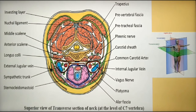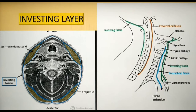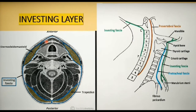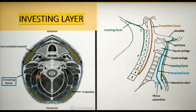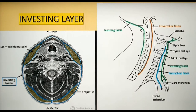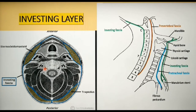Moving on to the investing layer of deep cervical fascia, depicted in blue color here. It is the more superficial aspect of the deep cervical fascia and it surrounds all the structures in the neck like a collar. In the cross-sectional view at C7 level, where the investing fascia meets the trapezius muscle and the sternocleidomastoid muscle, it splits into two and completely surrounds both muscles. Imagine the investing fascia as a tube with superior, inferior, anterior, and posterior attachments. In the cross-sectional image you cannot see the superior and inferior limits, so here is the sagittal view.